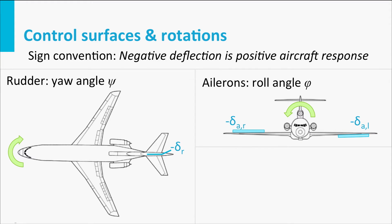The roll angle, we use the character phi, roll angle phi or bank angle phi, and here we also see that the minus sign of the deflection for ailerons left and right, which have an opposite sign convention, corresponds to a positive bank angle phi.